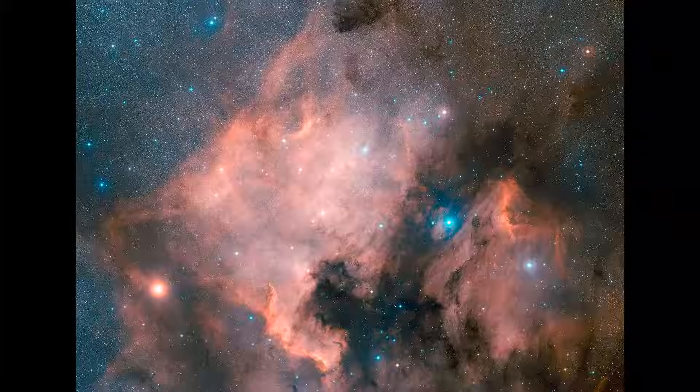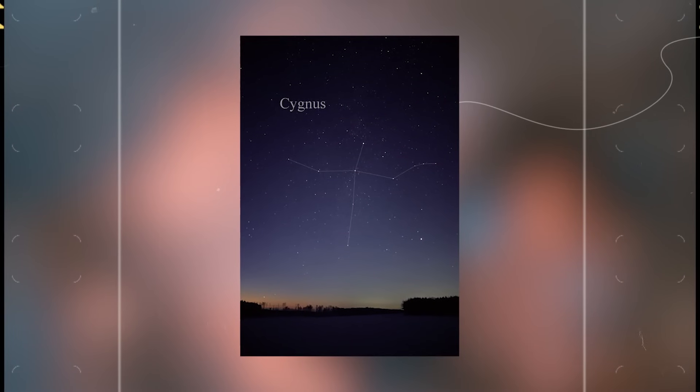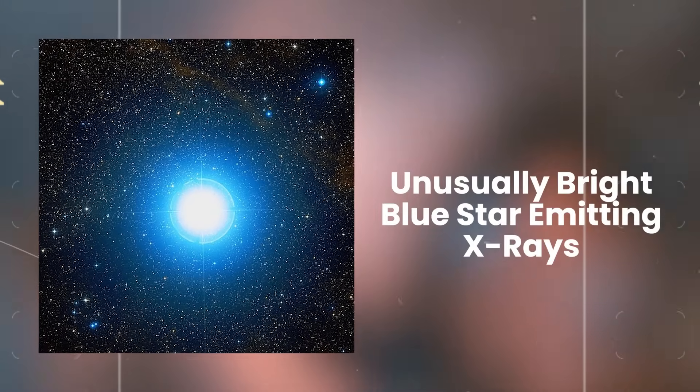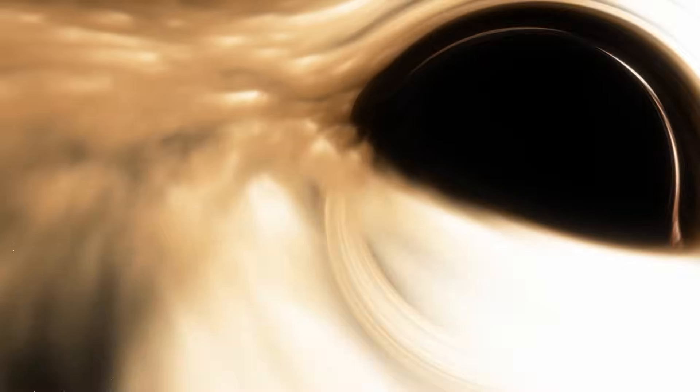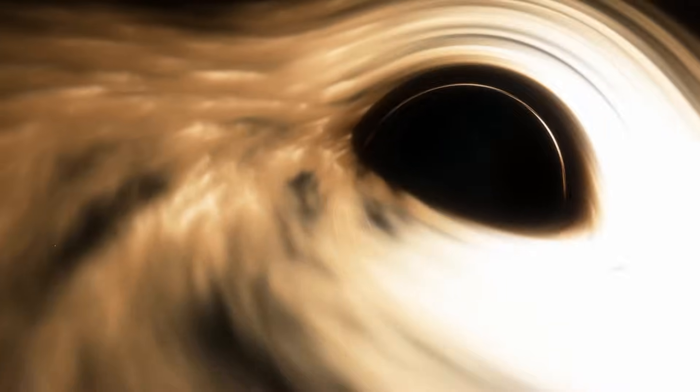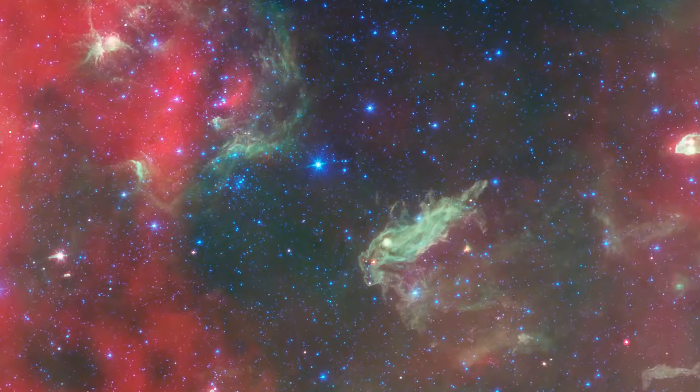It wasn't until the 1960s, during observations of the Cygnus constellation, that scientists stumbled upon an unusually bright blue star emitting X-rays. Further investigation revealed it wasn't just any star, it was orbiting something massive, something that sucked in those X-rays. Thus, the term black hole was born. This groundbreaking discovery validated Einstein's theory and sparked a frenzy of research.